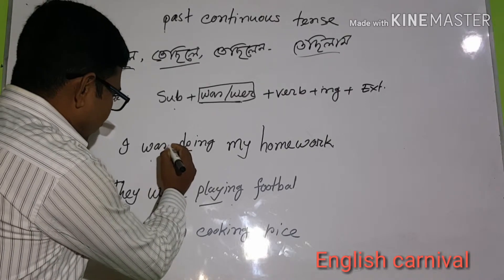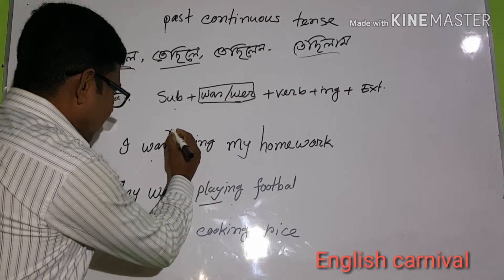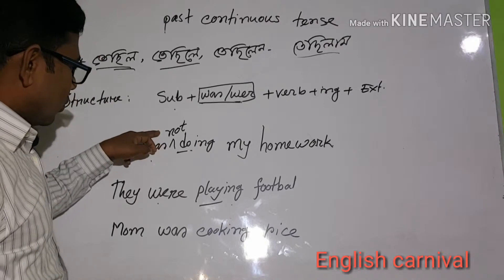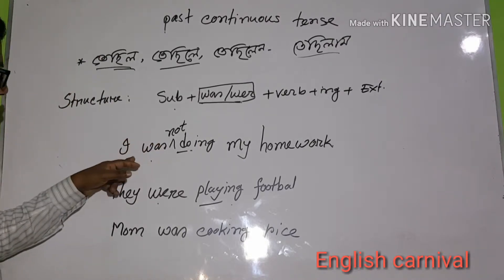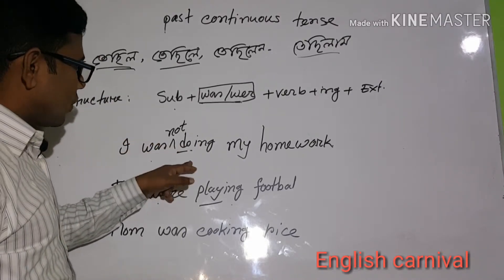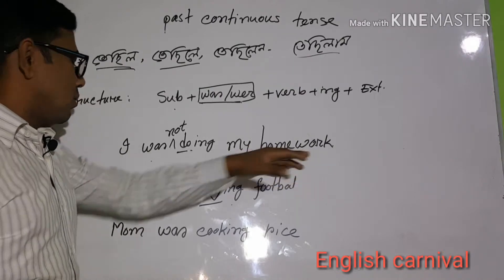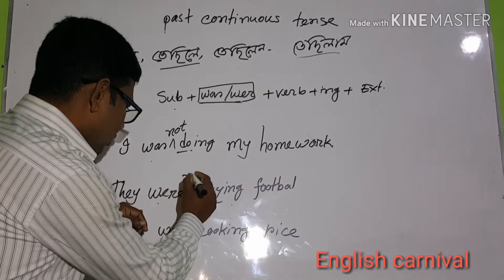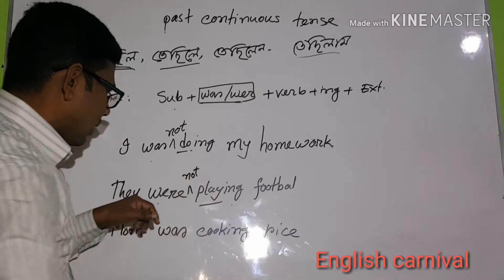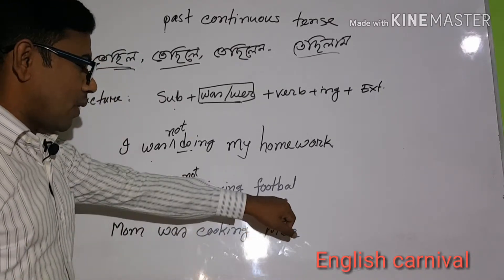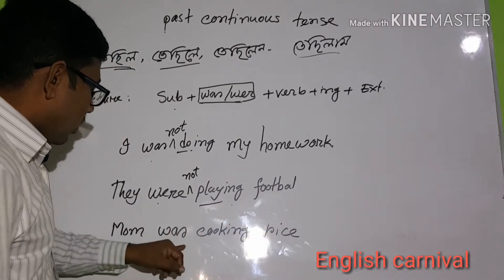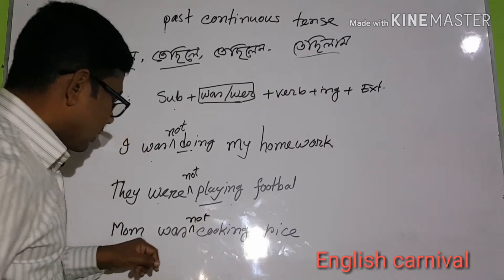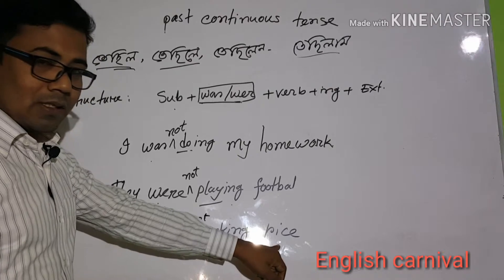For negative sentences, it is very simple. After was/were, just add 'not'. So the negative form becomes: Subject + was/were + not + verb-ing. Examples: 'I was not doing my homework.' 'They were not playing football.' 'Mom was not cooking rice.' Just insert 'not' after was/were.